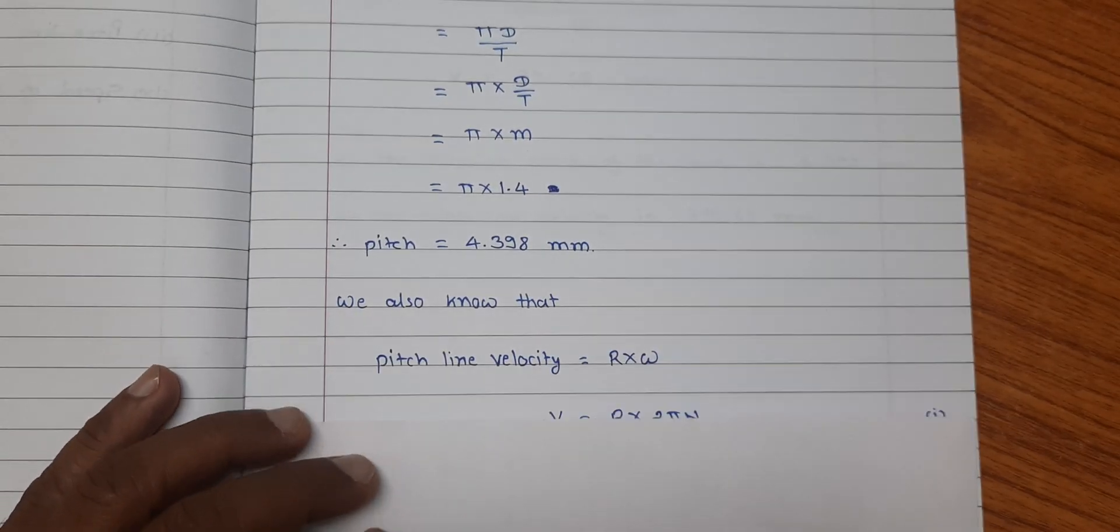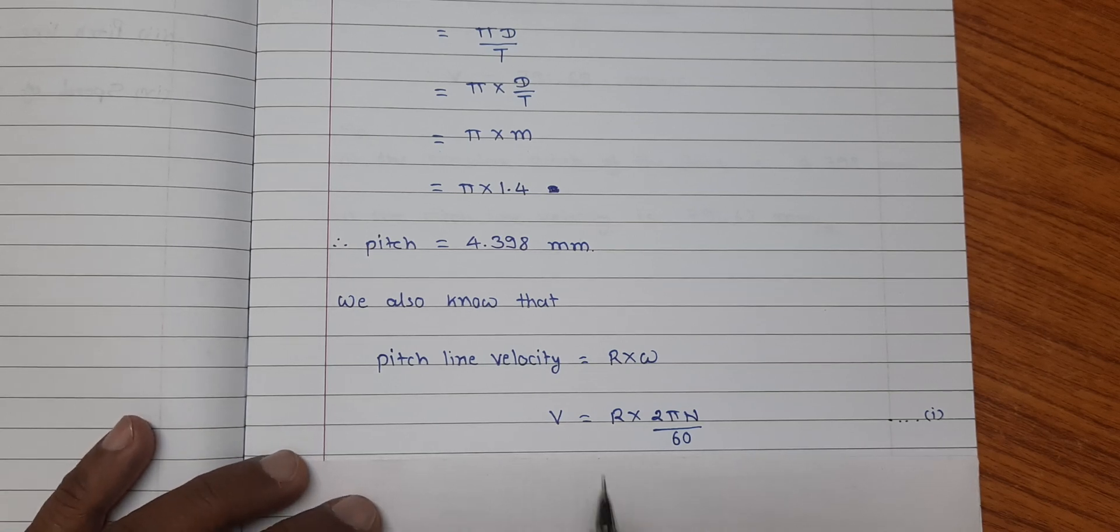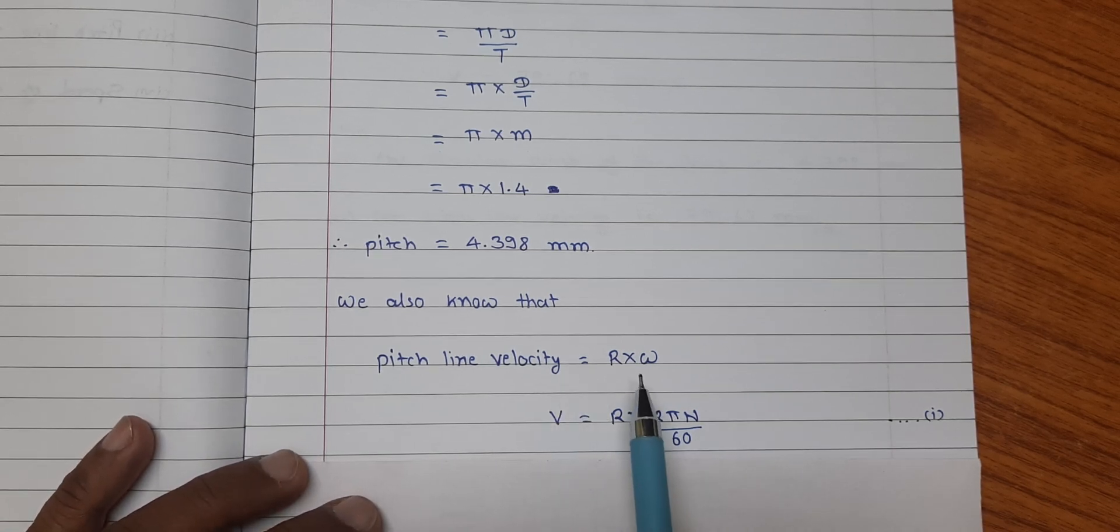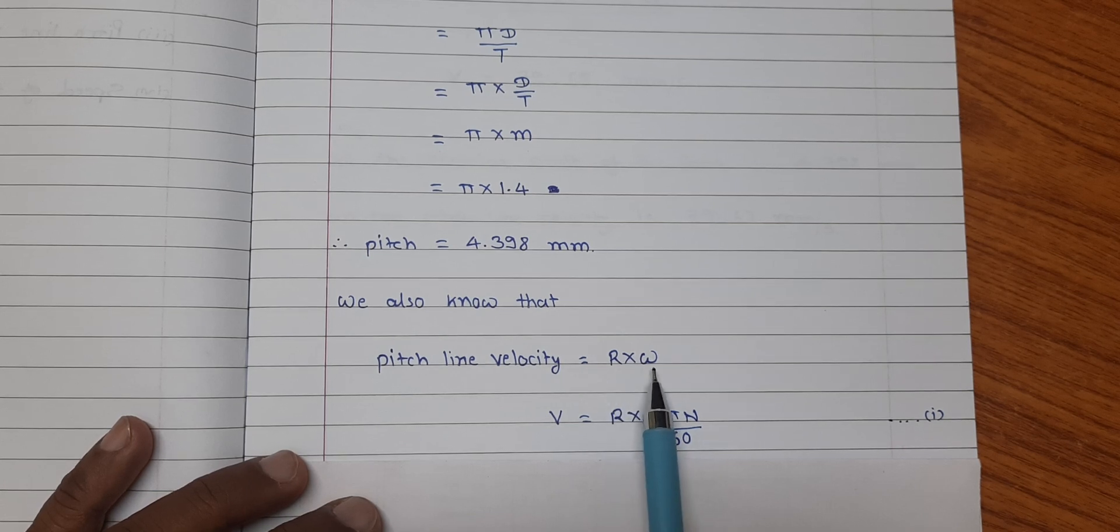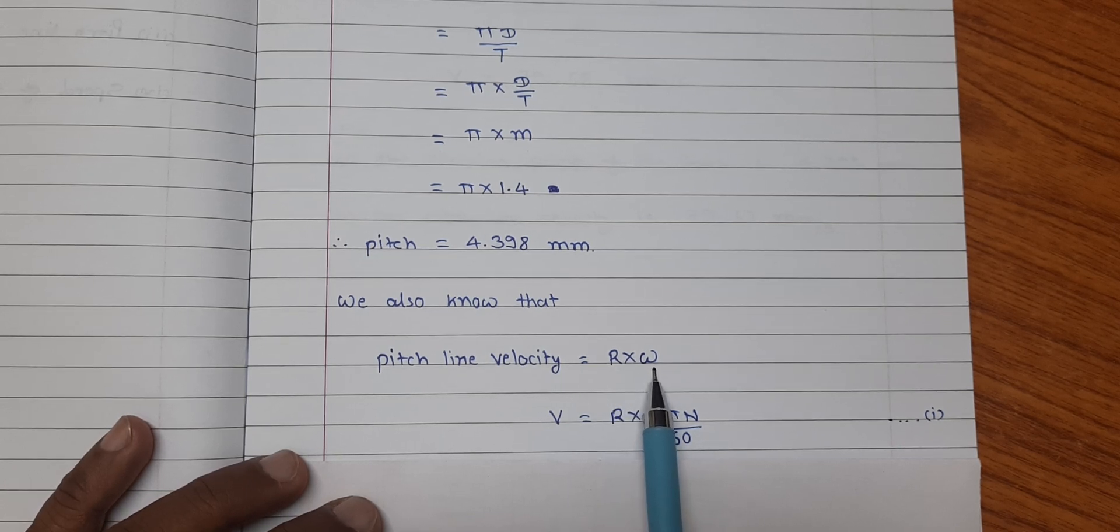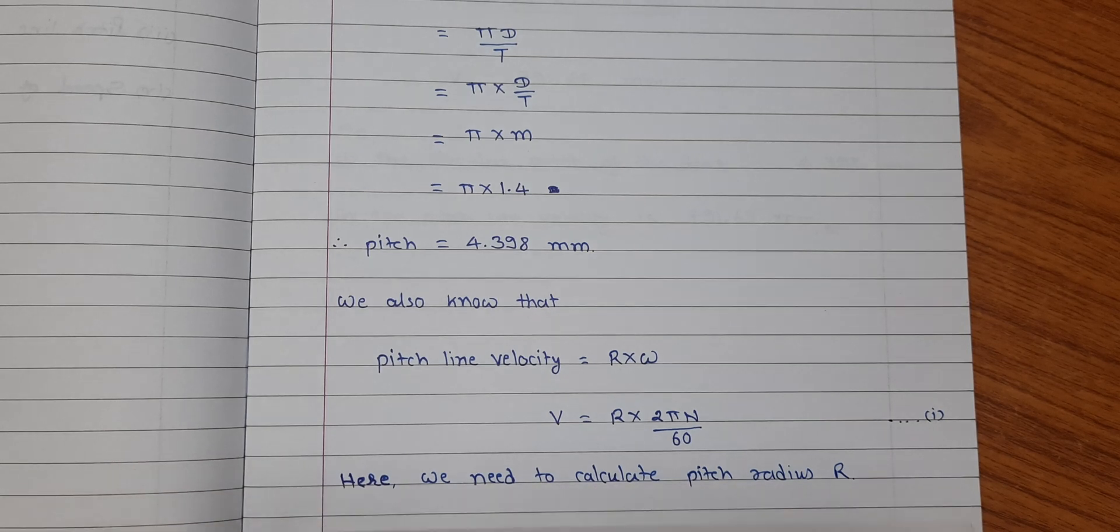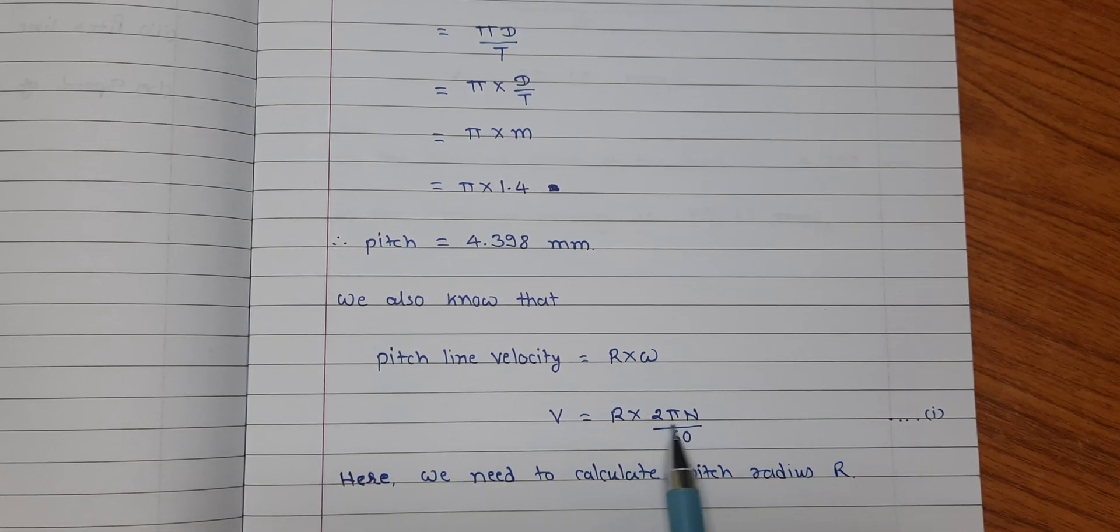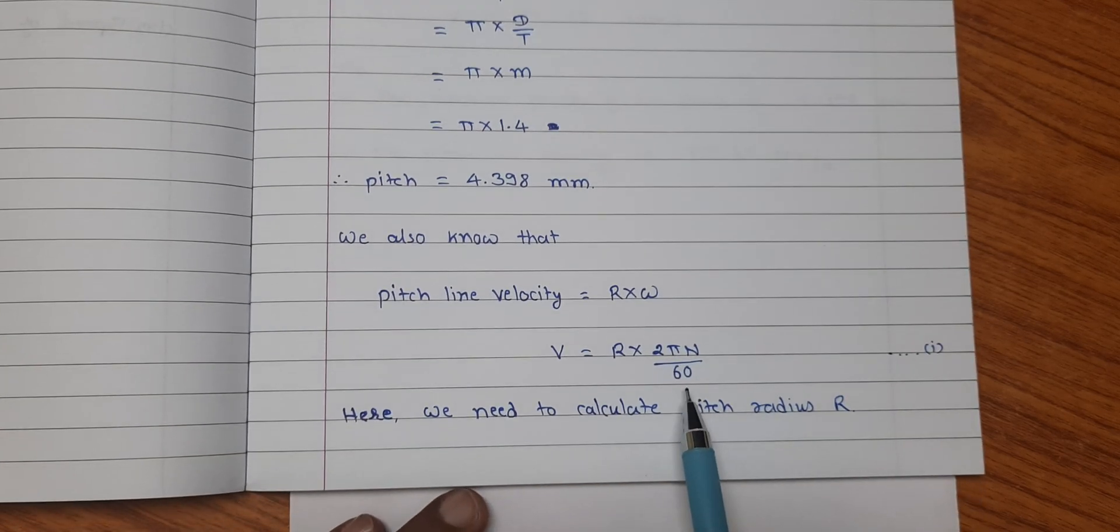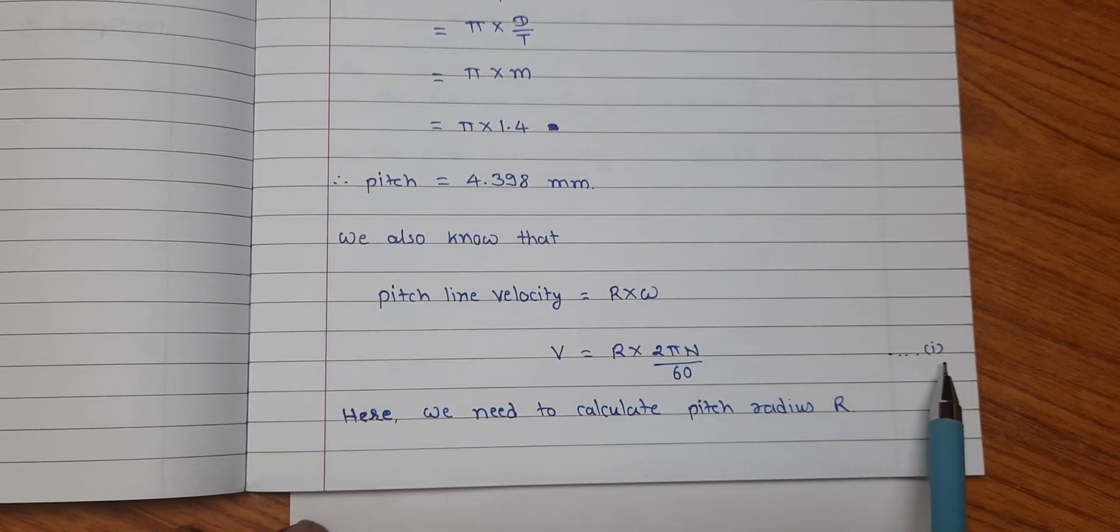We also know that the pitch line velocity is given by pitch circle radius of gear into angular velocity of gear. That is v is equal to r into 2 pi n by 60. Let us say this is relation 1.